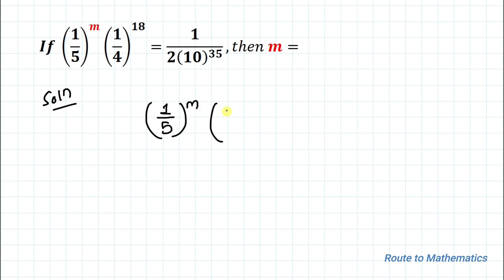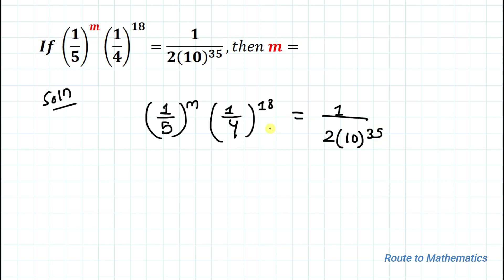The given question is: (1/5) to the power m, multiplied with (1/4) to the power 18, equals (1/2) multiplied with 10 to the power 35. We have an exponential equation and we are asked to find the value of the unknown variable m.